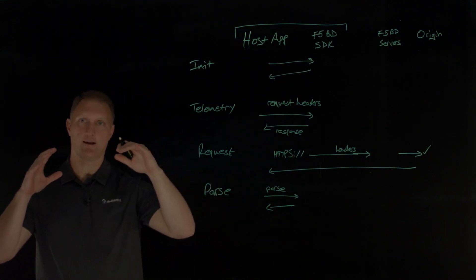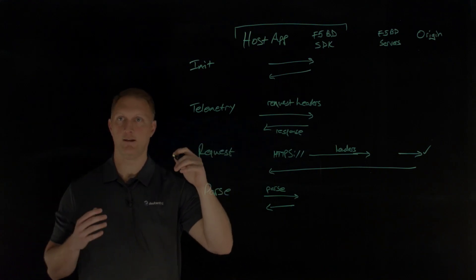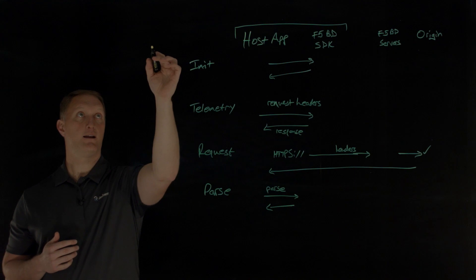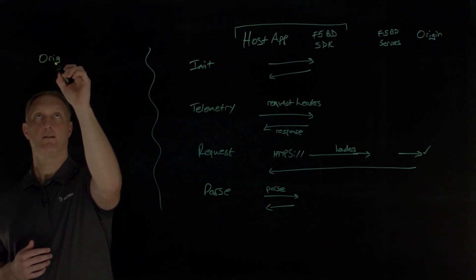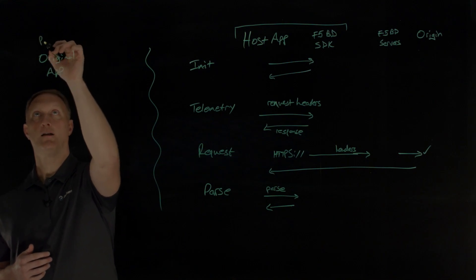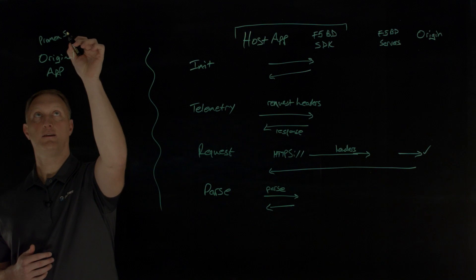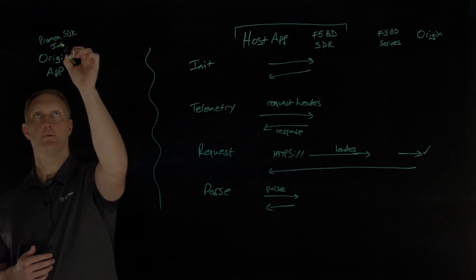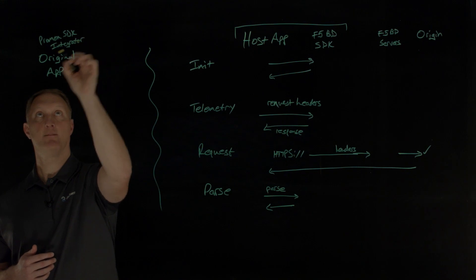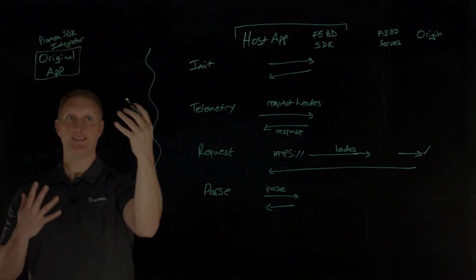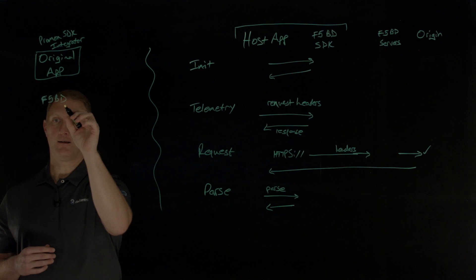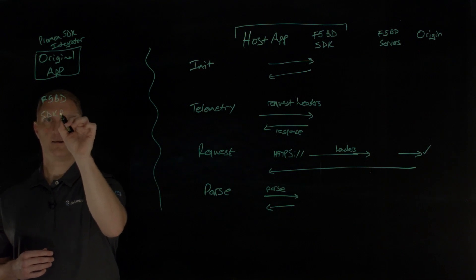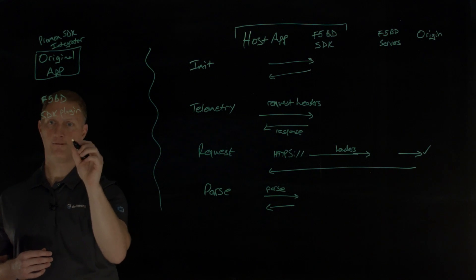So to integrate this F5 bot defense SDK with the application, we have the Promon SDK integrator. So we have the original app, and this is where the Promon SDK integrator would come into play. With the original app, you have the Promon SDK integrator, and then you have the F5 bot defense SDK plugin, and then you have a configuration file — an F5 bot defense config file. All of these need to be fed together.